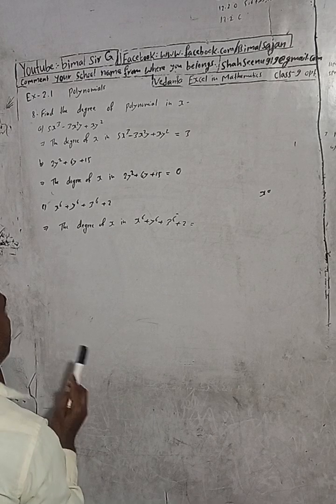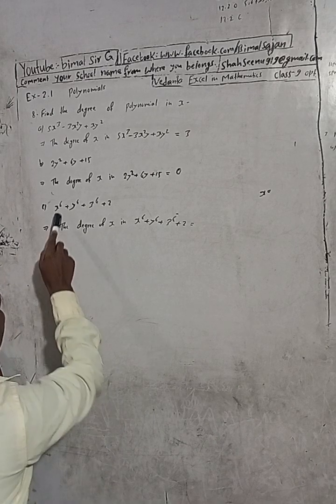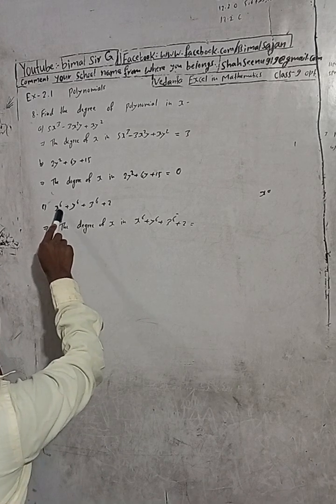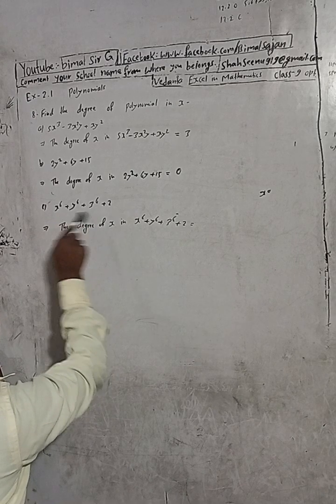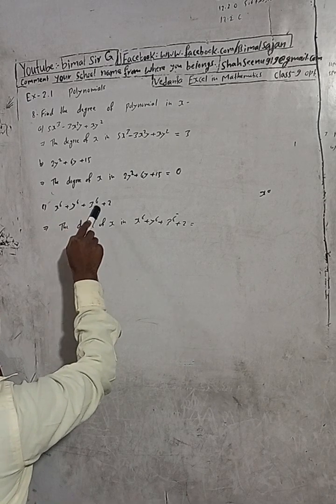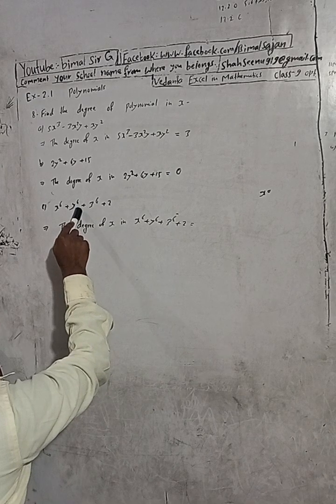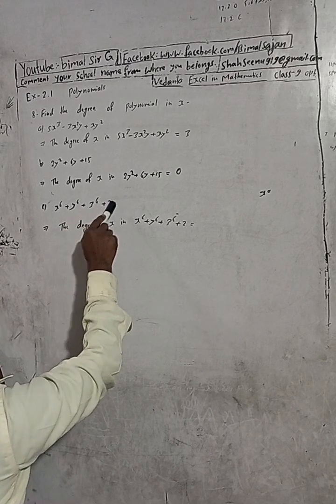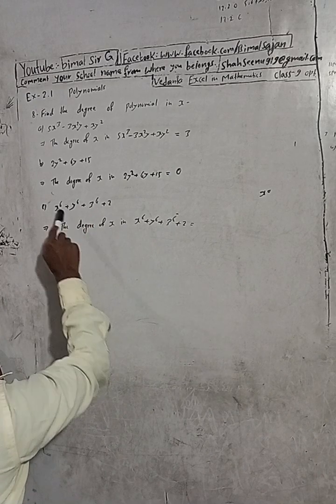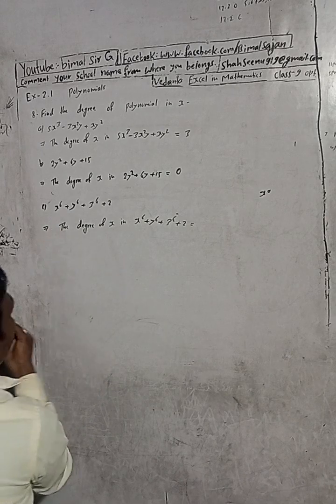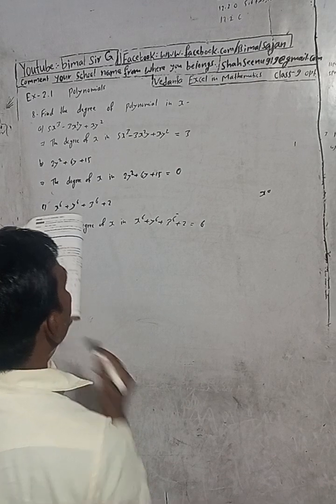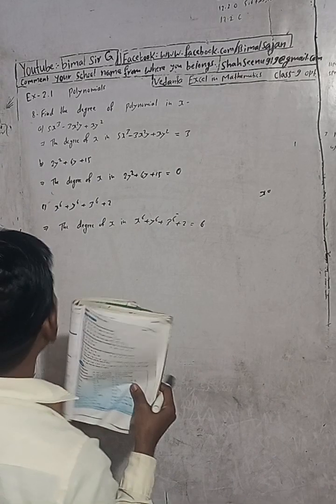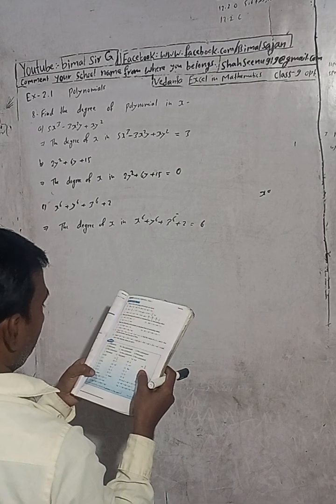We have to find the degree of x. Here is x with power 6, and here is y. We should not consider these terms - they would have x power 0. We can see that x highest power is 6, that's why the degree is 6. So the answer is 3, 0, 6.